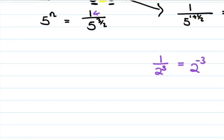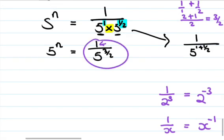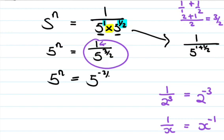In general, 1 over x can be written as x to the power negative 1. So we apply the negative index rule: 5 to the power n is equal to 5 to the power negative 3 over 2. Since the bases are equal, n is equal to negative 3 over 2.